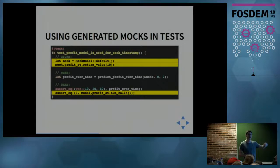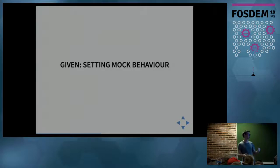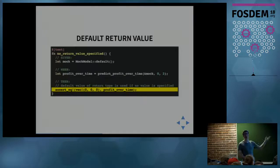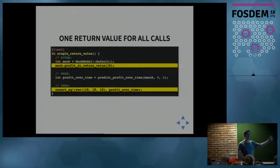We can make assertions at the end of the test for how the mock was called. In this case, profitAt.num_calls is three. There's various ways you can set mock behavior. If you don't specify anything, it uses the default value of the return type. We can set a single return value for all calls, like we did before. We can set a sequence of return values, like 1, 5, 10.